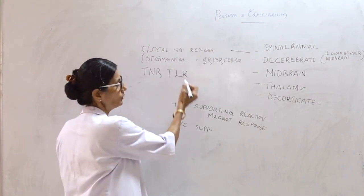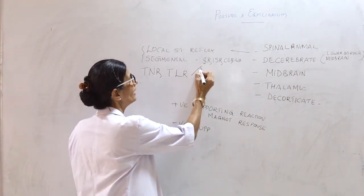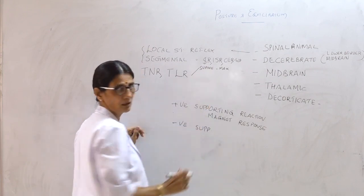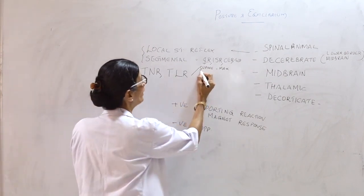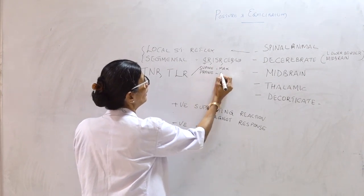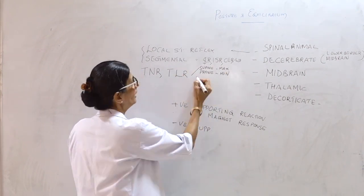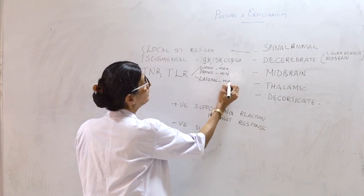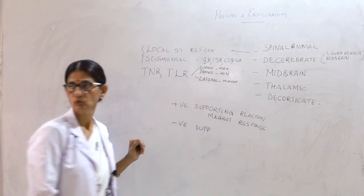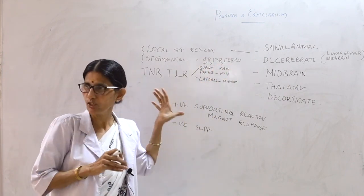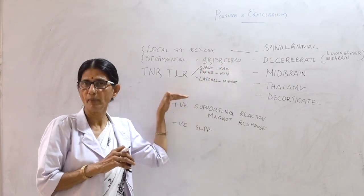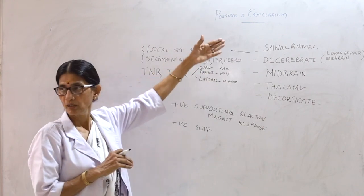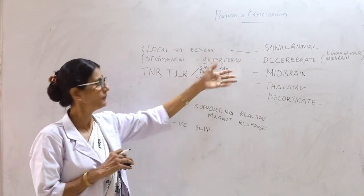Coming to the tonic labyrinthine reflex: when the animal is placed in the supine position it exhibits maximum rigidity of the limbs. In the prone position, rigidity is minimum. In the lateral position, rigidity is midway between prone and supine. This is due to the labyrinthine apparatus — the utricular and saccular maculae — which help with posture maintenance.